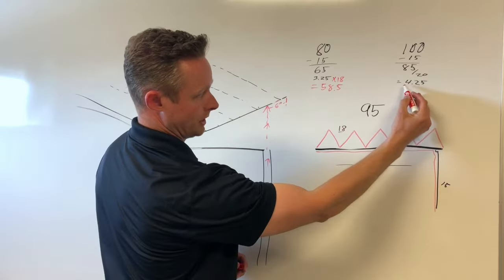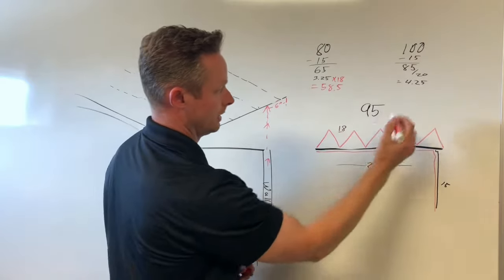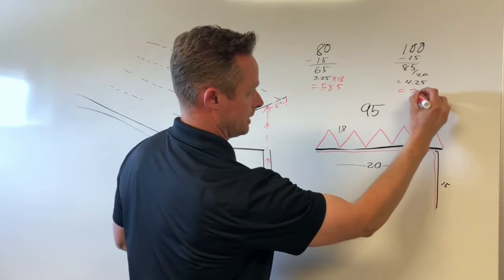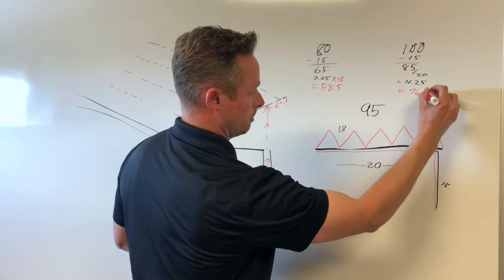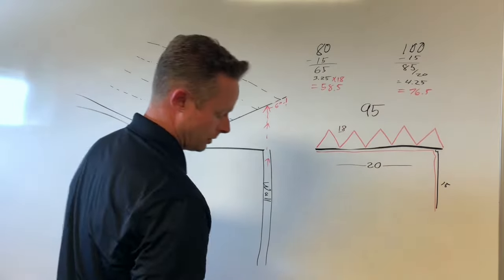Let's come over on this one, take the 4.25 times the same thing, 18, and you end up with a different number, it's 76.5. Now here's what you do with those numbers.